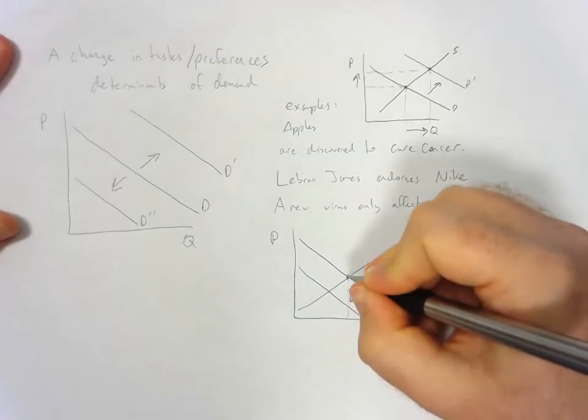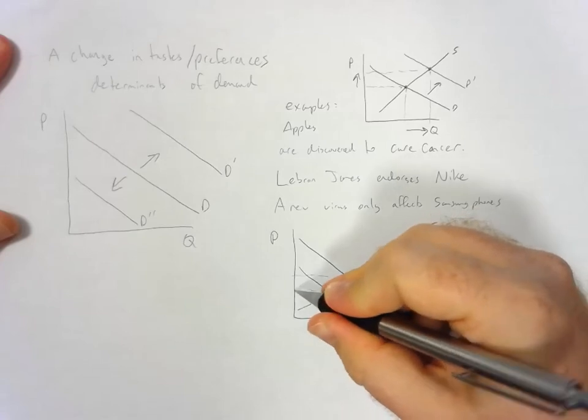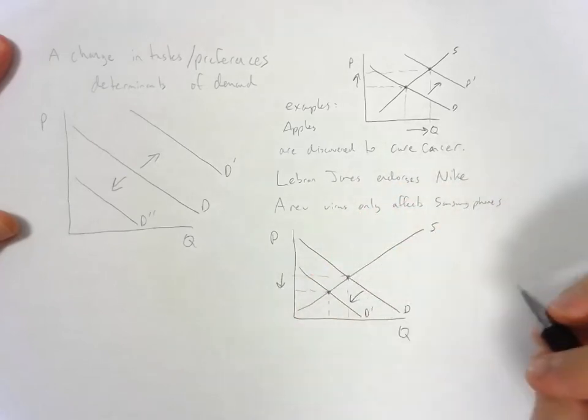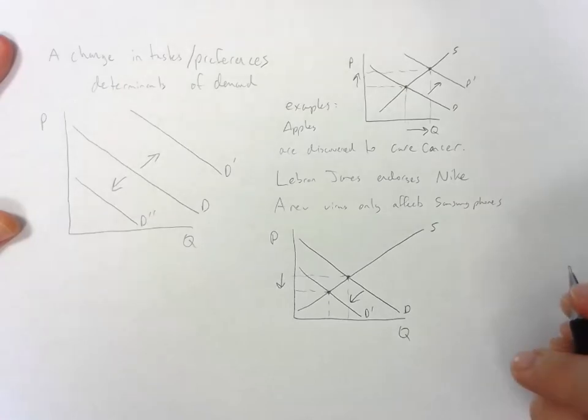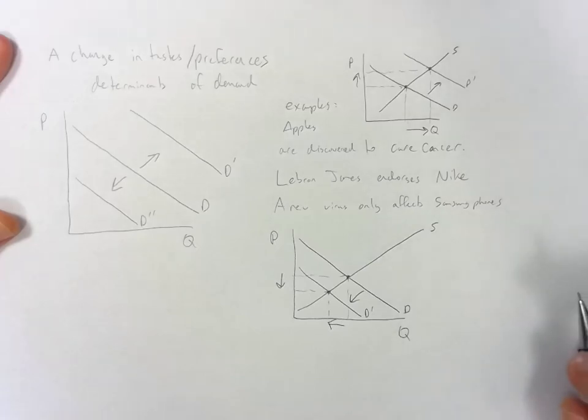We have our original equilibrium price and quantity, and then we have our new equilibrium price and quantity. The equilibrium price goes down. You see a lot of sales for those phones that are catching on fire, and equilibrium quantity also goes down because many people are no longer buying that phone because they're afraid that it'll catch on fire.